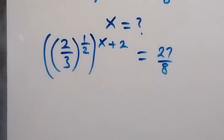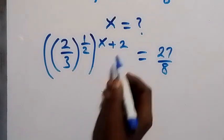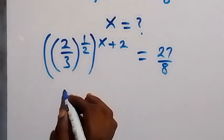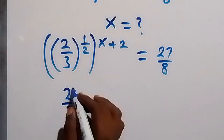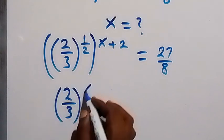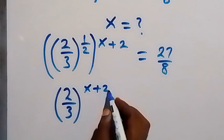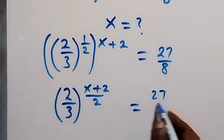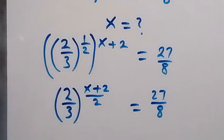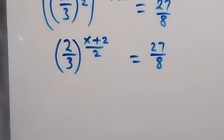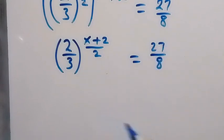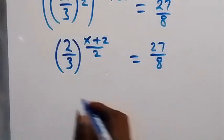From the law of indices, when we have a power raised to another power, we multiply them. So this becomes 2 over 3 raised to power (x plus 2) times half, which is the same as 2 over 3 raised to power (x plus 2) all over 2, and this equals 27 over 8.